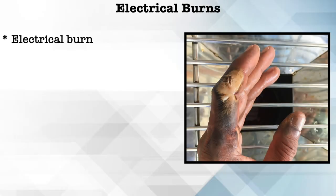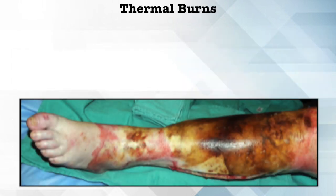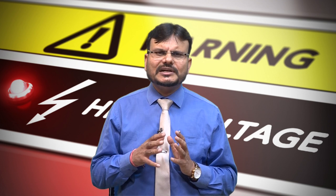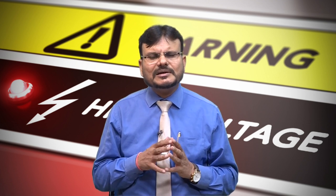Electrical burns are injuries that result from the passage of electrical current through body tissues. They occur when the electrical current generates heat within the body, causing damage to the skin and underlying tissues. Electrical burns can be more complex than typical thermal burns. They can be classified as thermal burns — similar to burns caused by fire or hot objects — which occur when skin and underlying tissues are exposed to high temperature due to contact with overheated electrical equipment or conductors.